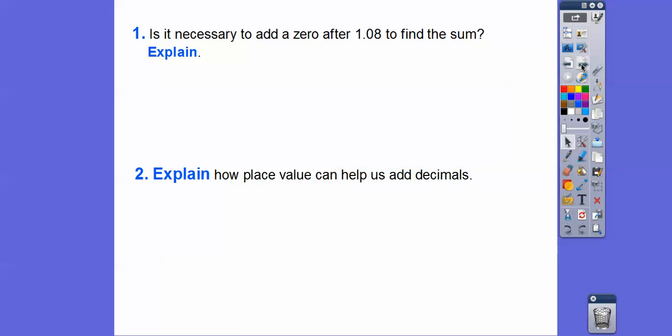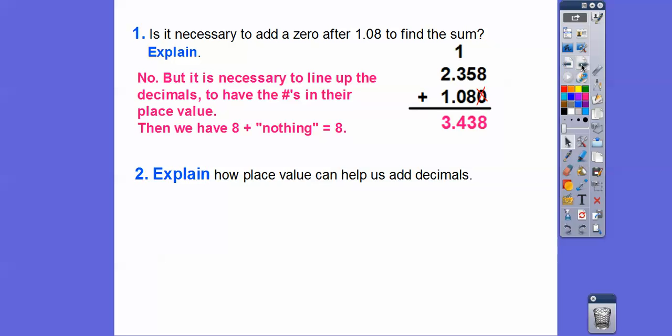So was it necessary to add the 0 after the 1.08 to find the sum? Not necessarily. You can leave a blank spot there, and then 8 plus nothing is the same as 8 plus 0. So explain how place value helps us add up numbers. Well, we've got to make sure these decimals are lined up, and as long as those decimals are lined up, then we just add straight down like we would with whole numbers.